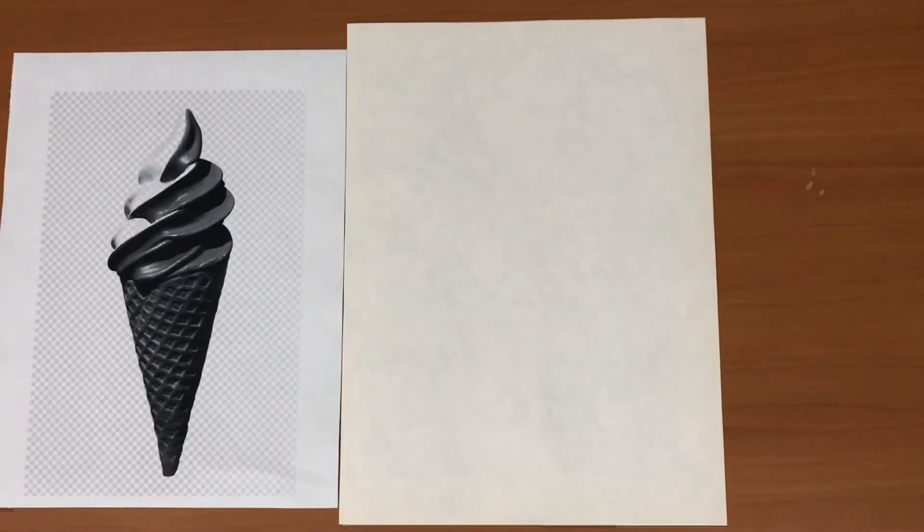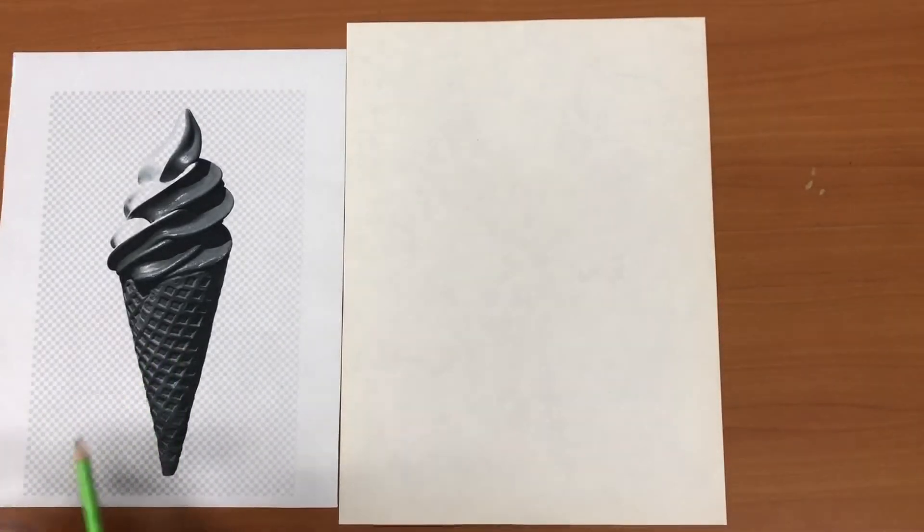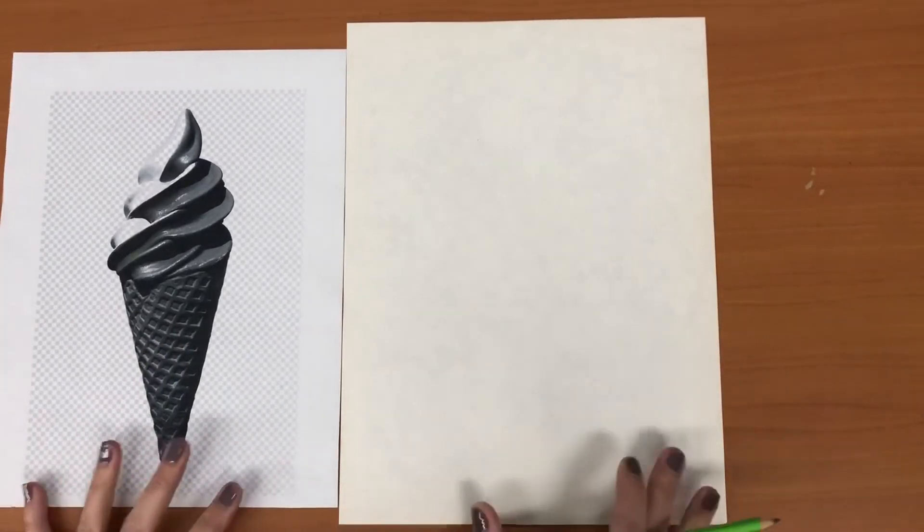Hi artists! We are going to start sketching our ice cream cone. When we sketch the outlines of an object we call that a contour line drawing.